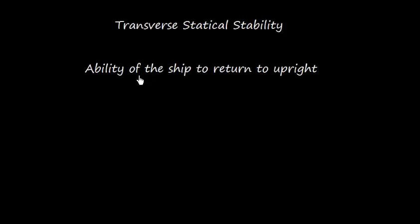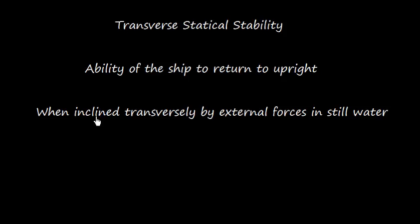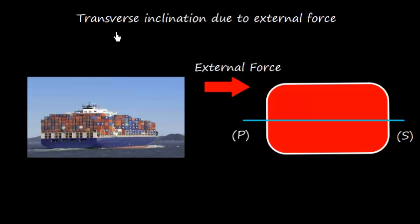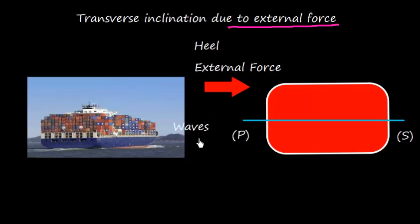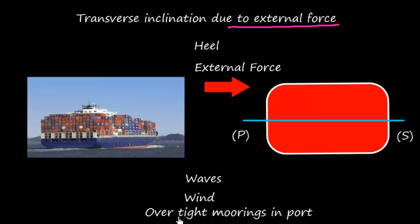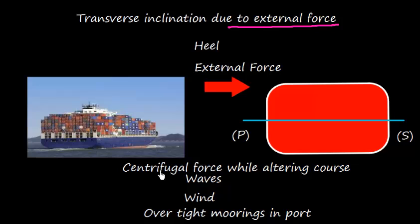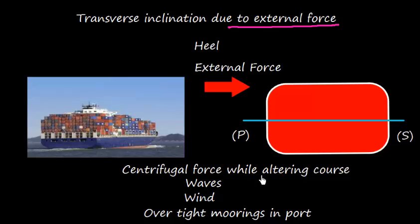In transverse statical stability we study the ability of the ship to return to upright. There are a few important conditions: the ship must be inclined transversely by some external force, and the vessel must be in still water. We discuss the transverse inclination of a ship due to an external force, which is called heel. These external forces could be waves, wind, overtight moorings in port, or the vessel altering course.